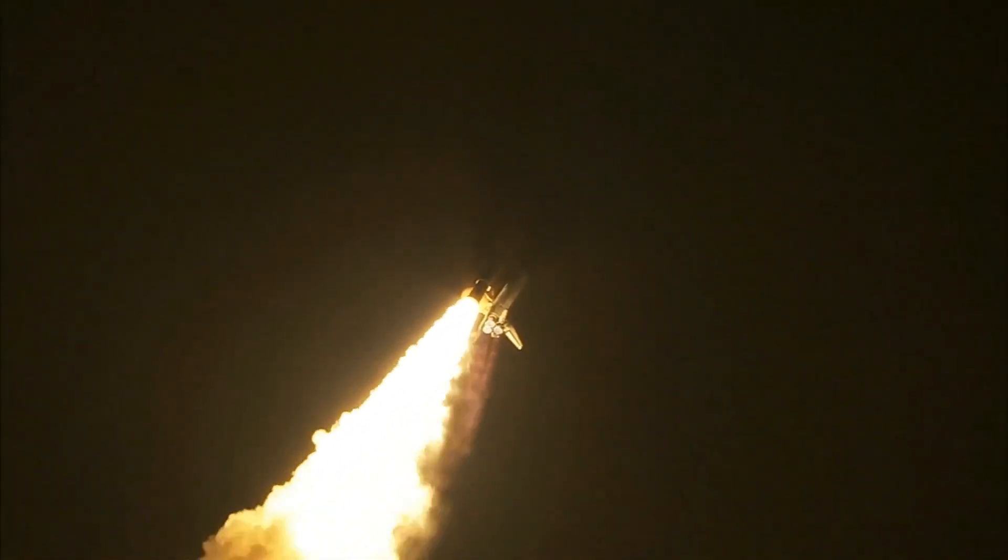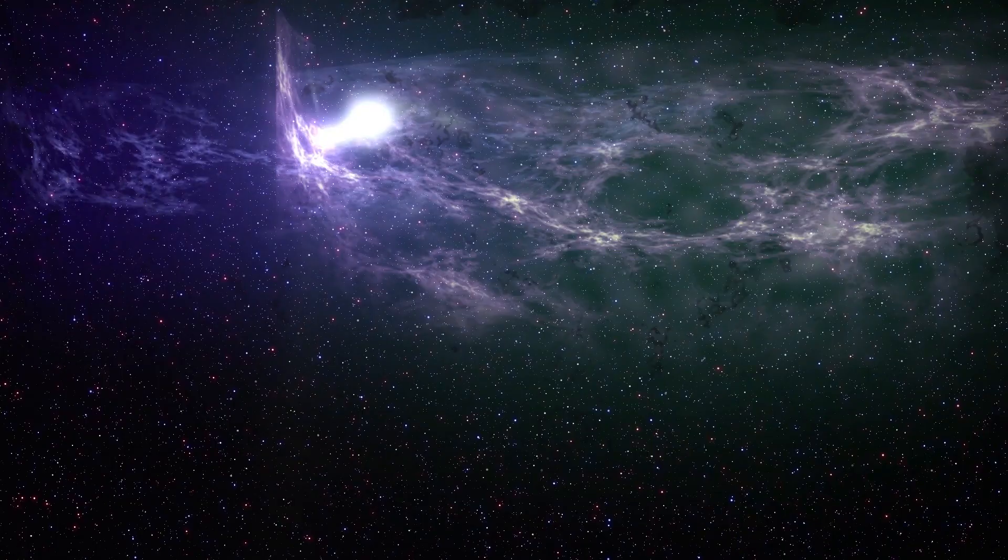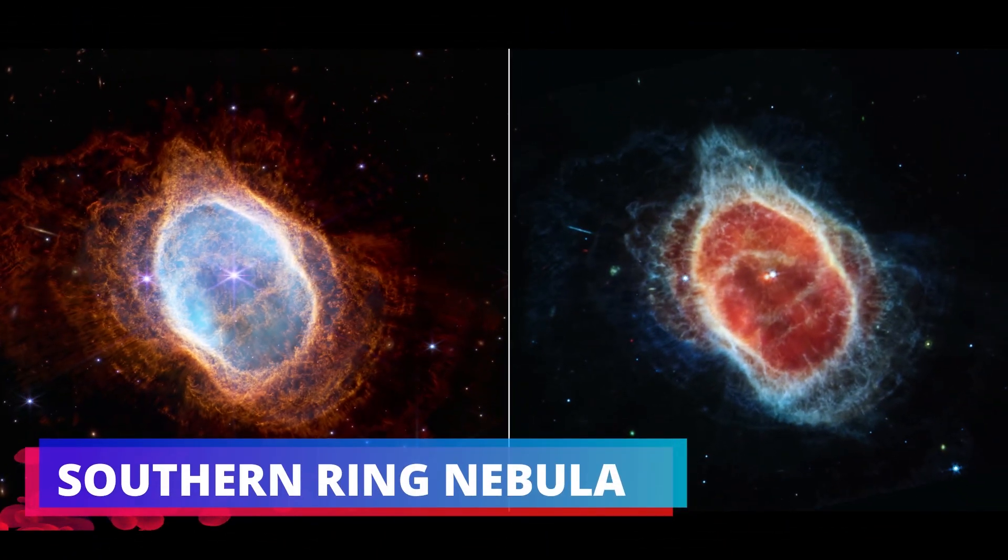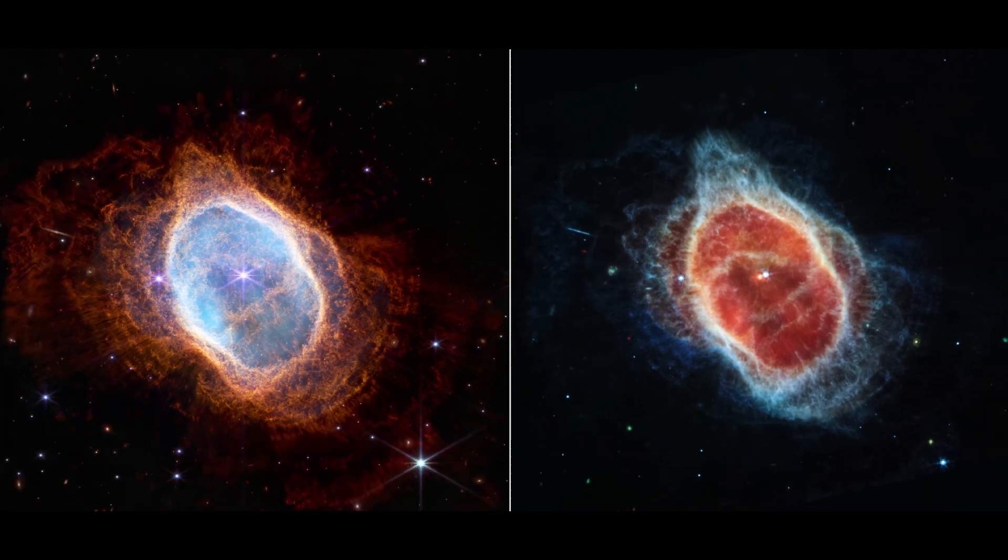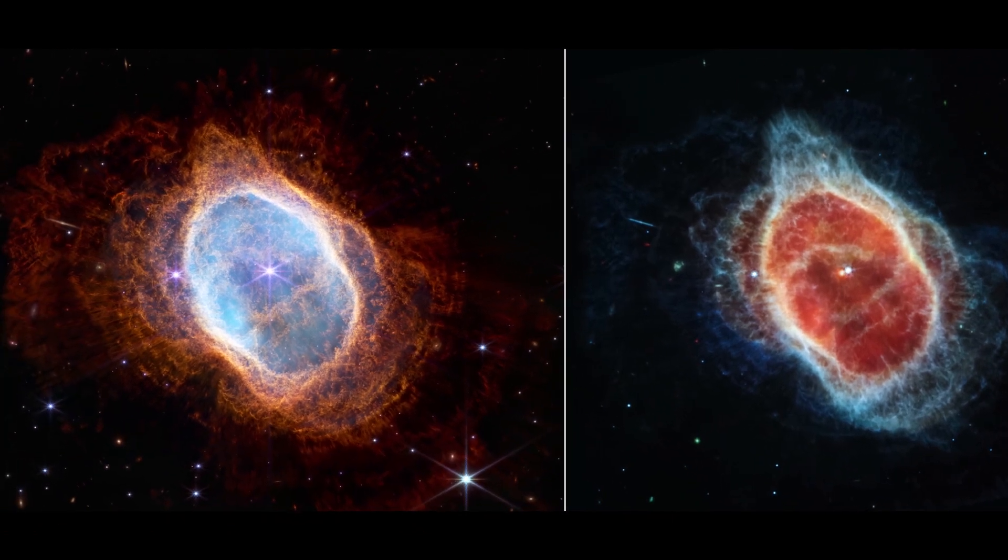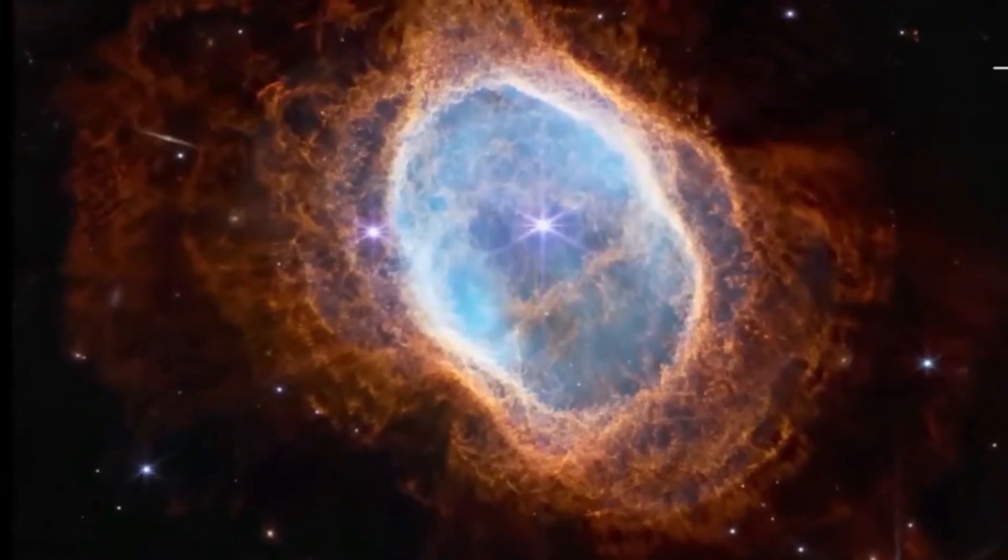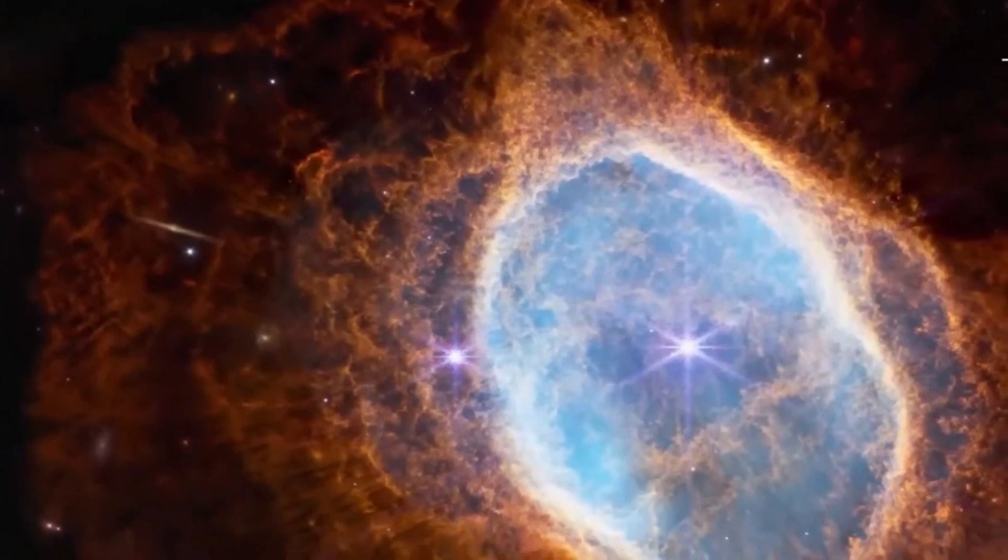After several months of traveling through the emptiness of space and additional months of calibration, the James Webb Telescope was ready for its first assignment: to capture the Southern Ring Nebula 2,000 light-years away. Webb shot this amazing picture using both its near-infrared and mid-infrared cameras. The more clear image on the left was captured by the near-infrared camera, which is the telescope's best capturing device, while the one on the right was shot by the mid-infrared camera.